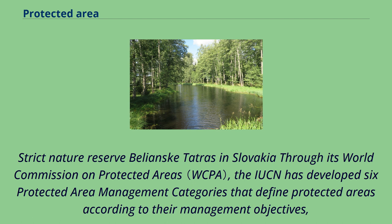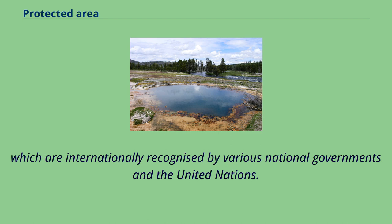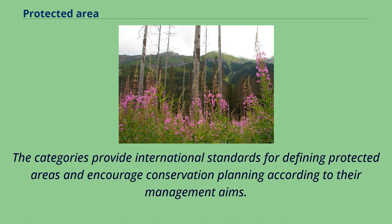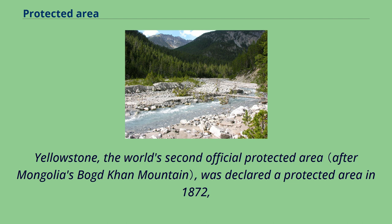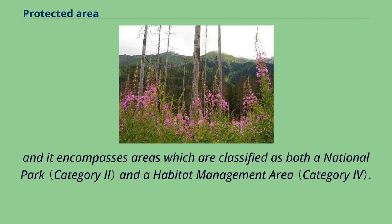Through its World Commission on Protected Areas, the IUCN has developed six protected area management categories that define protected areas according to their management objectives, which are internationally recognized by various national governments and the United Nations. The categories provide international standards for defining protected areas and encourage conservation planning according to their management aims. Yellowstone, the world's second official protected area, was declared a protected area in 1872, and it encompasses areas classified as both a national park and a habitat management area.